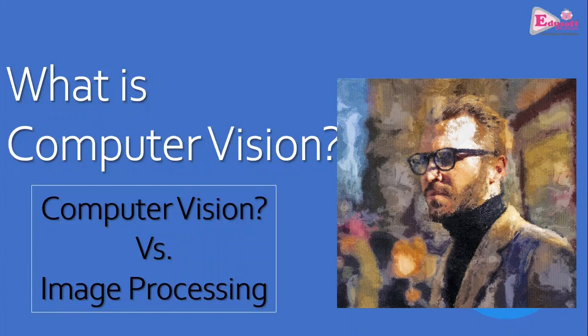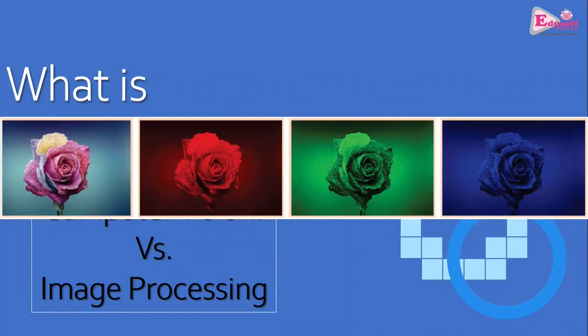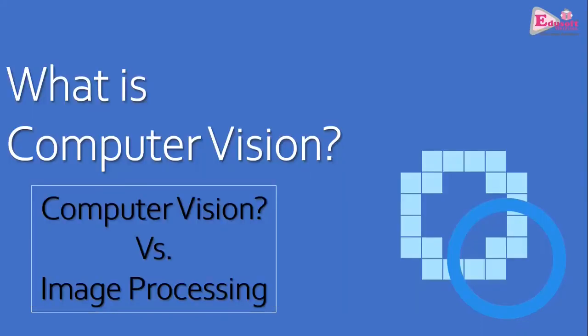In computer vision, the purpose is completely different. The input to the system is an image, or could be more than one image, but the output is not an image. The output is data which describes that image. So we are still dealing with data, but it is in the form of an image.